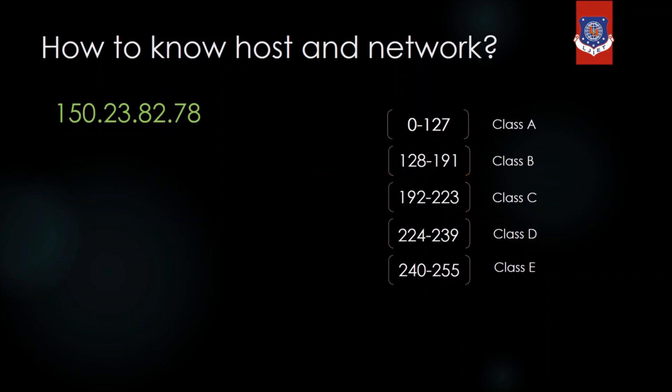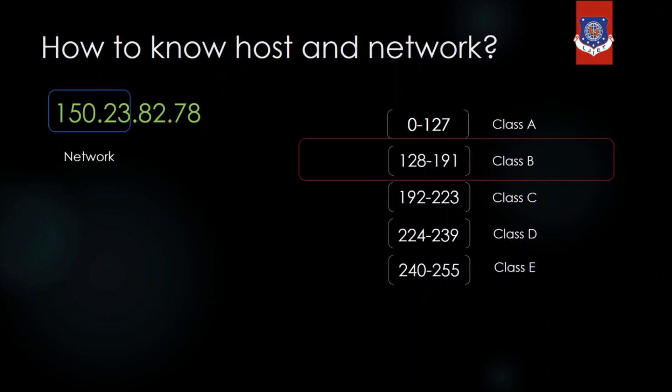The next example is 150.23.82.78. The first octet is 150, which identifies this as a Class B IP address. In a Class B IP address, 16 bits are for the network and 16 bits are for the host.